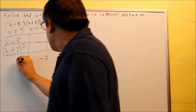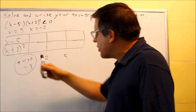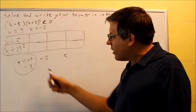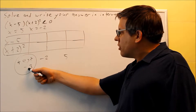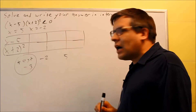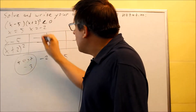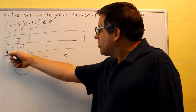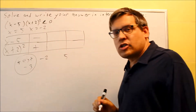For the first region, I'll test negative 3 — any number less than negative 2 works. Plugging negative 3 into x minus 5: negative 3 minus 5 gives a negative number. For x plus 2 squared: negative 3 plus 2 is negative 1, but we're squaring it, so the result is positive.